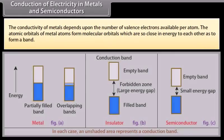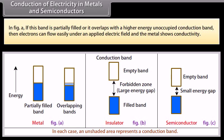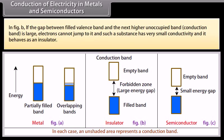Conduction of electricity in metals and semiconductors: The conductivity of metals depends upon the number of valence electrons available per atom. The atomic orbitals of metal atoms form molecular orbitals which are so close in energy to each other as to form a band. In figure a, if this band is partially filled or it overlaps with a higher energy occupied conduction band, then electrons can flow easily under an applied electrical field and the metal shows conductivity. In figure b, if the gap between filled valence band and the next higher unoccupied band conduction band is large, electrons cannot jump to it and such a substance has very small conductivity and it behaves as an insulator.